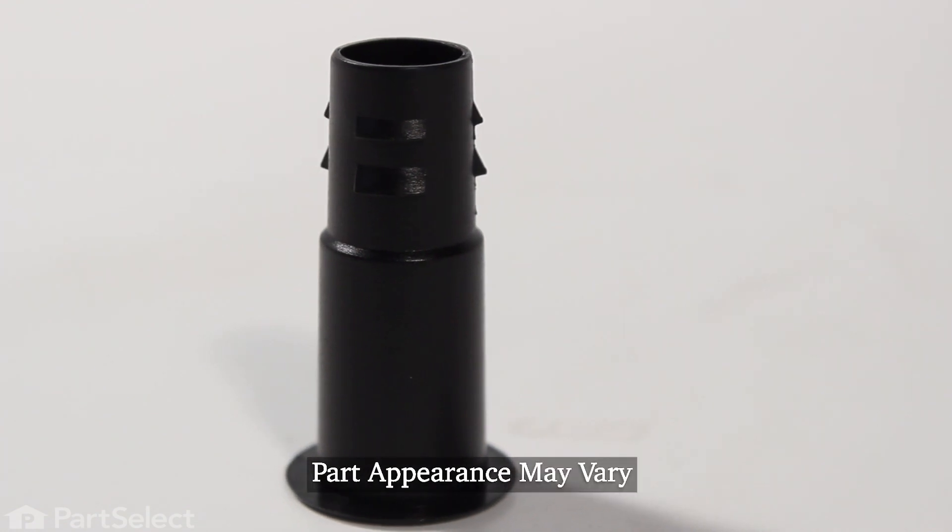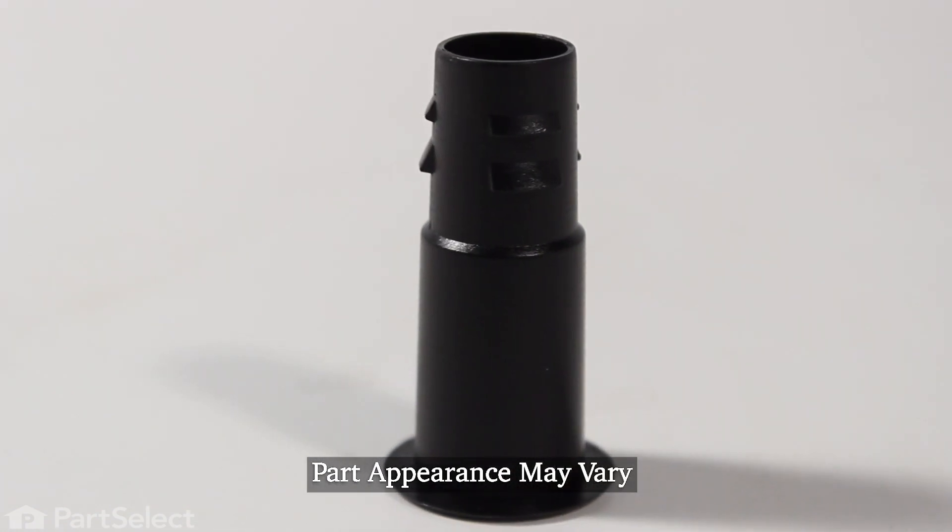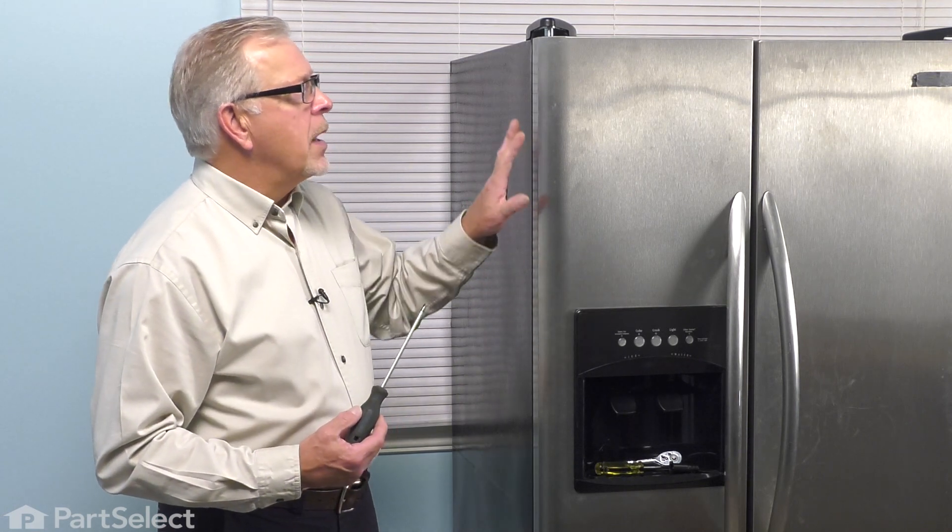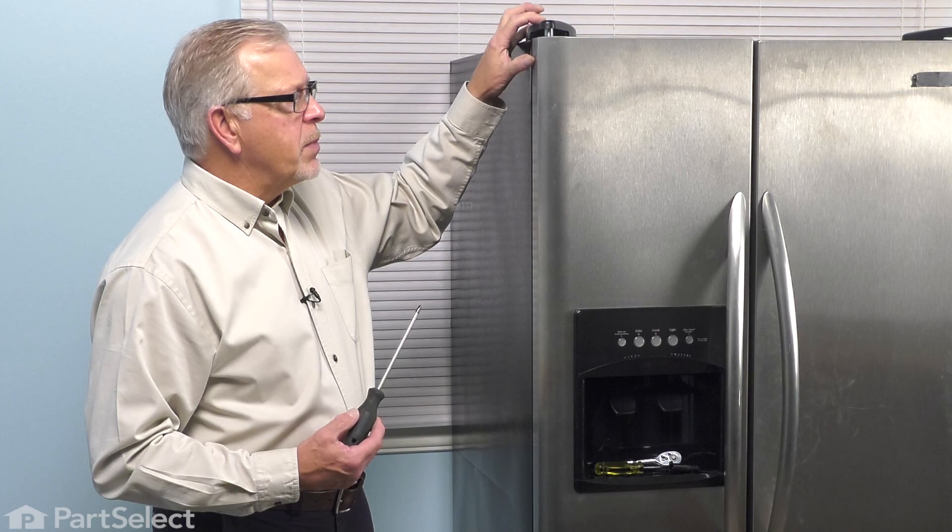Hi, it's Steve. Today, we'd like to show you how to change the upper hinge bushing on your refrigerator. It's a really easy job. Let me show you how we do it. They use the same hinge bushing for both the fresh food door and the freezer door. We're going to show you how to change it on the freezer side because it is a little bit more difficult.